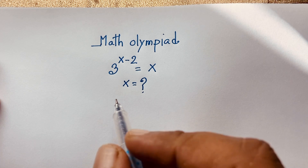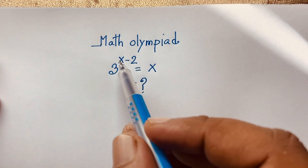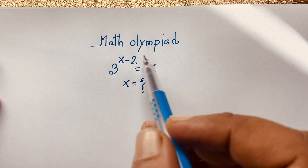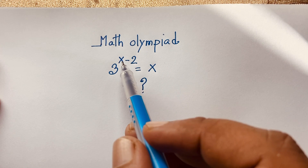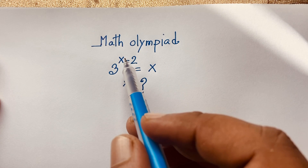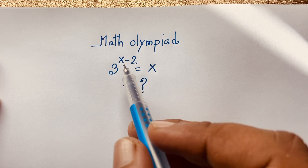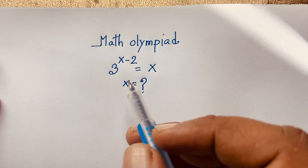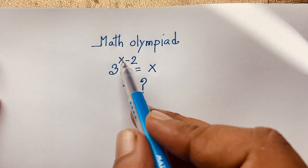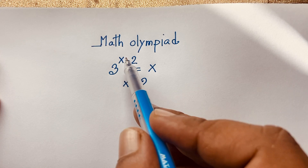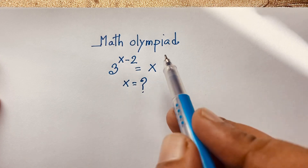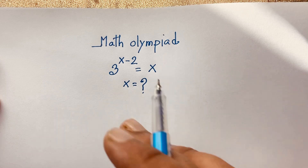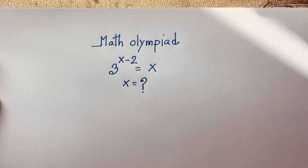If I want to solve this question, first of all, if you think x is equal to 1, it is not equal to x. If you think x is equal to 2, it is not equal. If you think x is equal to 3, this time you can see 3 to the power 3 minus 2, it will be 3 to the power 1, is equal to 3. So, you can see the answer is x is equal to 3.